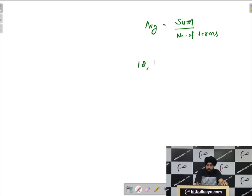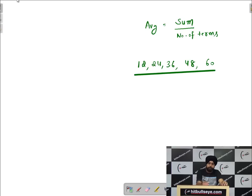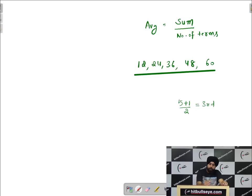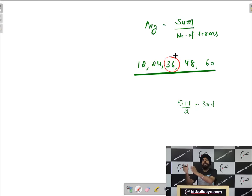Let's take an example: calculate the average of 12, 24, 36, 48, and 60. There are five terms, so the middle term is the third term, which is 36. The middle term becomes the average when the terms are at equal difference.